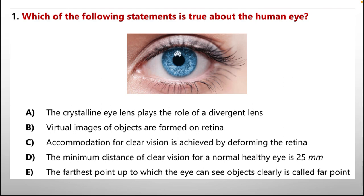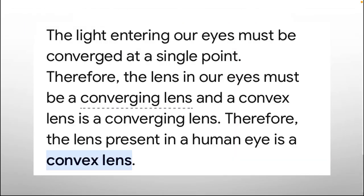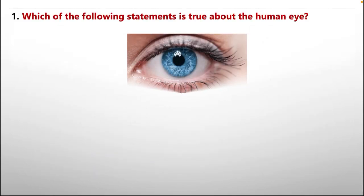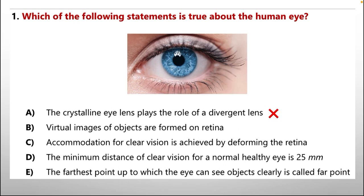We are going to scrutinize every option one by one. The light entering our eyes must be converged at a single point, so the lens in our eyes must be a converging lens. A convex lens is a converging lens, meaning the lens in the human eye is convex. Therefore, option A is incorrect because it states the lens is divergent, which is the opposite.